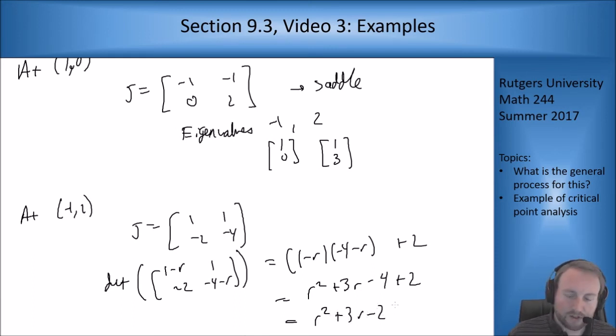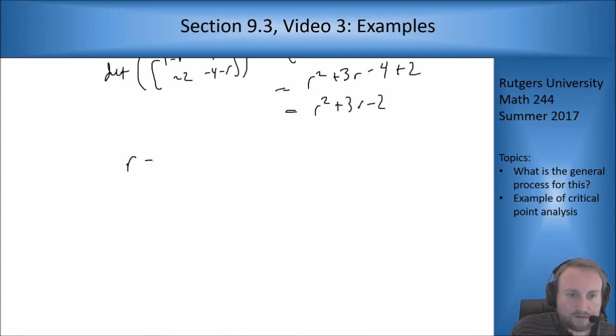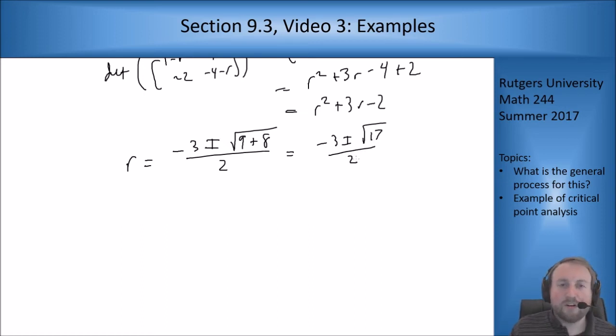This doesn't factor, so we use the quadratic formula: r equals -3 plus or minus root 17 over 2. This is a saddle point because root 17 is bigger than 3, so -3 plus root 17 gives a positive eigenvalue and -3 minus root 17 gives a negative one.